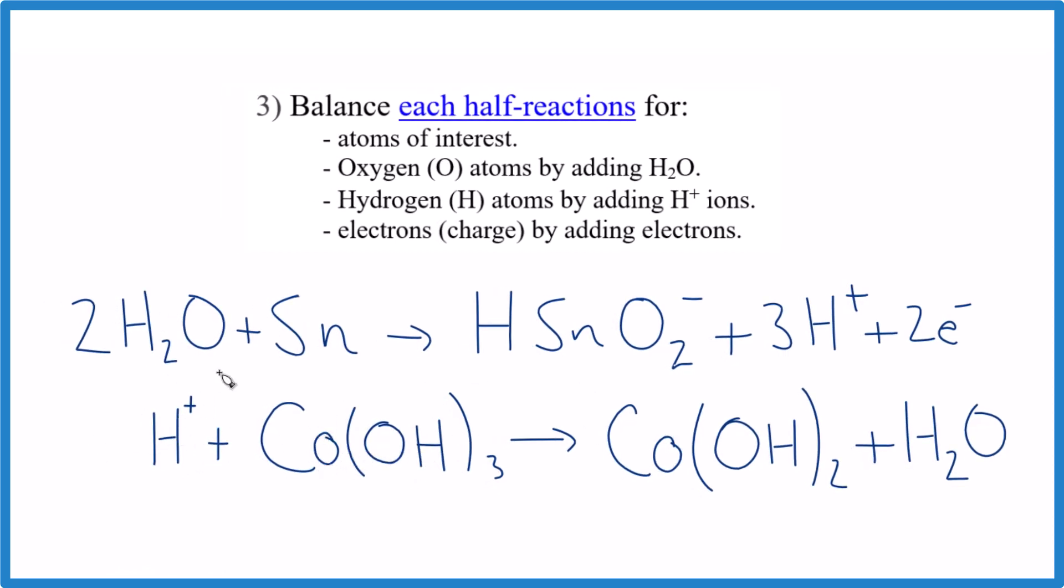Now we have the same oxygens on each side. We have three hydrogens here, two plus two is four, so we need to add one H+. Now we have four hydrogens on each side. To balance the charge, we need to balance out this positive charge—let's add one electron here. That balances the charge.